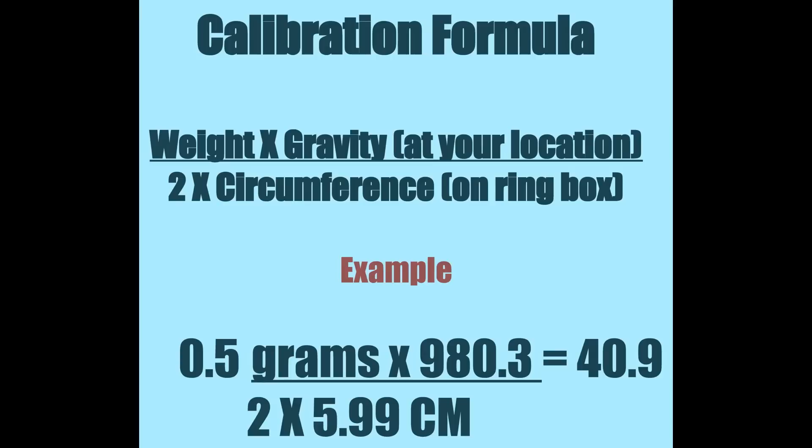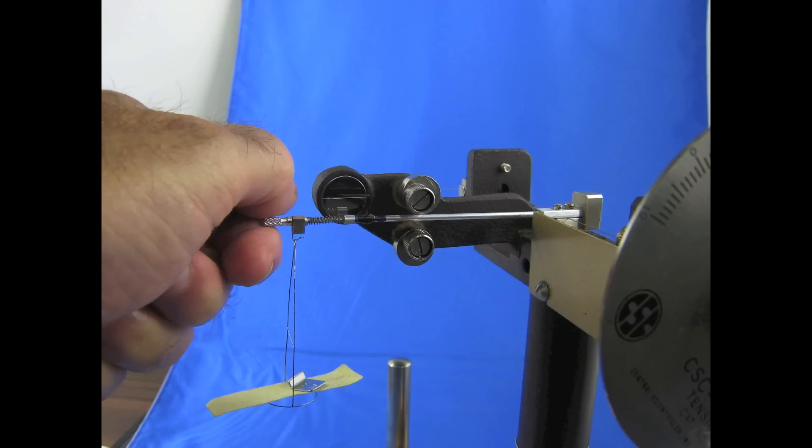The ring circumference is printed on the ring box label. If the dial reading you recorded and the calibrated number are within 0.5 dynes of each other, you are finished. If the two numbers are farther apart, however, you will have to adjust the torsion arm.